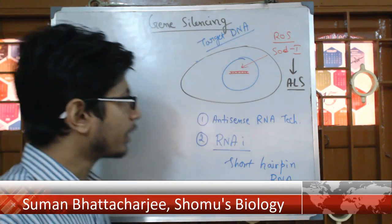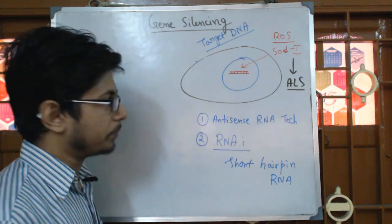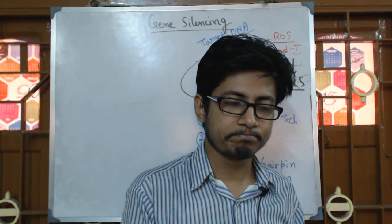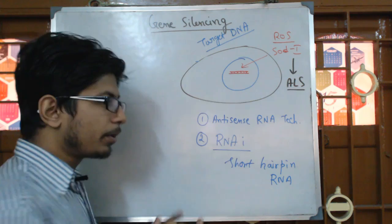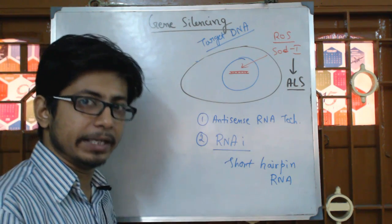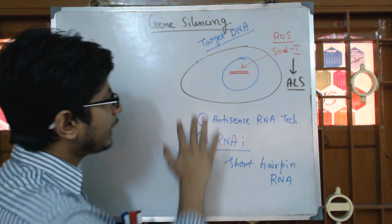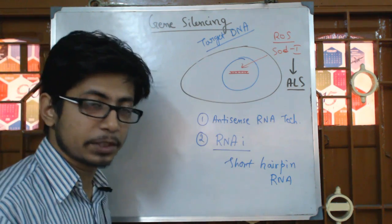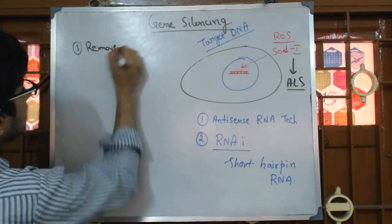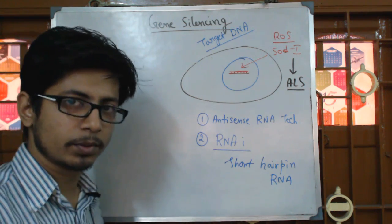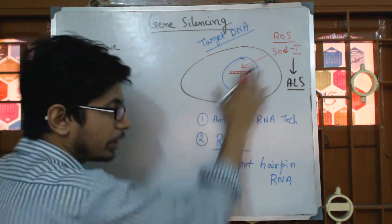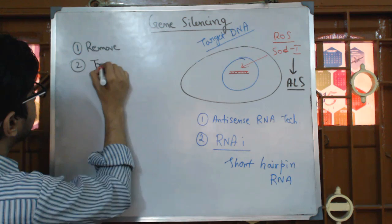Welcome back. We are going to talk about antisense RNA technology. We know about gene silencing, which means we don't want any expression of a gene — that means we don't want any copies of protein made from that gene. Gene silencing can be done in three different ways: first, we can completely remove that gene through a gene knockout process; second, we can regulate expression at the transcription level.